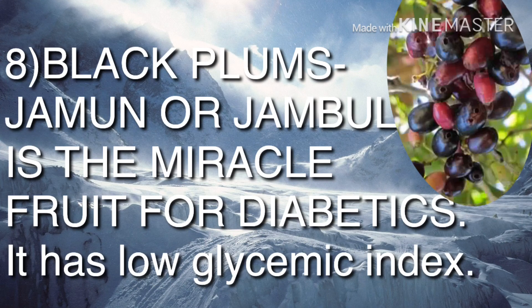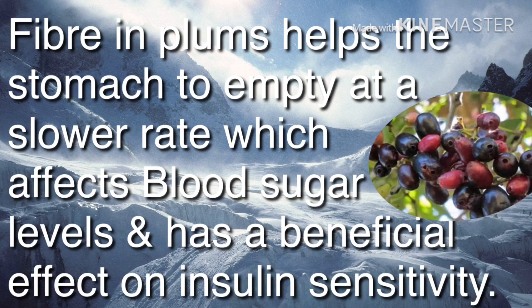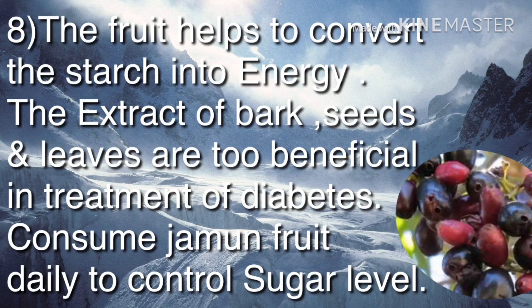Black plums — Jamun or Jambul — are the miracle fruit for diabetics. They have a low glycemic index and soluble fiber in plums helps the stomach to empty at a slower rate, which beneficially affects blood sugar levels and insulin sensitivity. The fruit helps convert starch into energy. The extract of bark, seeds, and leaves are also beneficial in treatment of diabetes. Consume jamun fruit daily to control sugar levels.